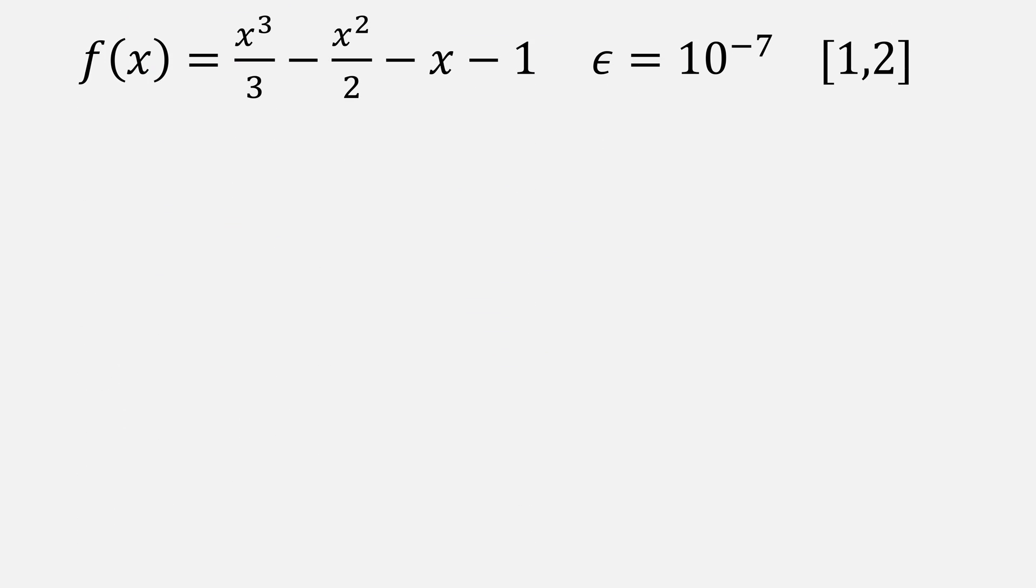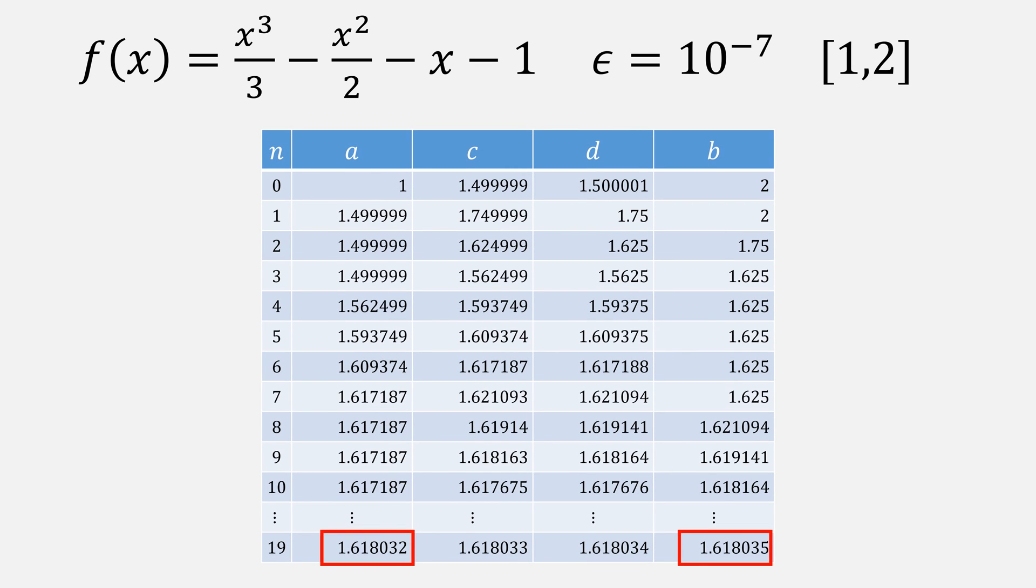Using our same example from ternary search, if we run a dichotomous search, this only needs 19 iterations to find our final interval A and B. Meanwhile, ternary search required 34.